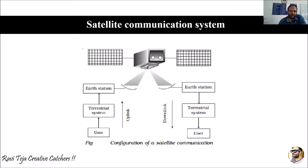In this basic block diagram, two users are accessing a single satellite for communication. To take an example of how this communication works, let's consider a mobile communication or a live show communication system. Suppose this user is trying to access a signal from the terrestrial system — say a phone conversation or someone recording a live from a particular area. This is User 1.